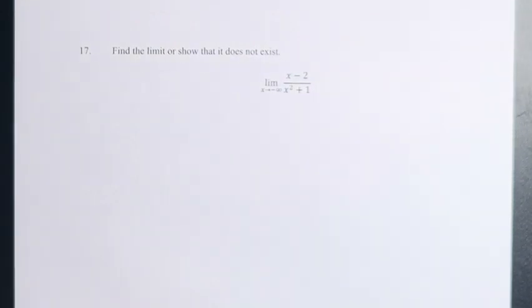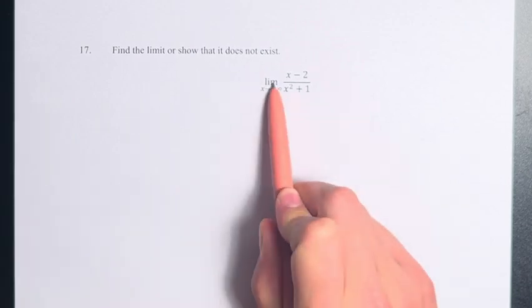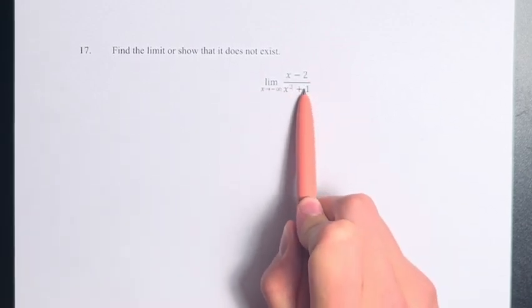Hello and welcome back to another video. In this problem, we're asked to find the limit or show that it does not exist. We have the limit as x approaches negative infinity of x minus 2 over x squared plus 1.